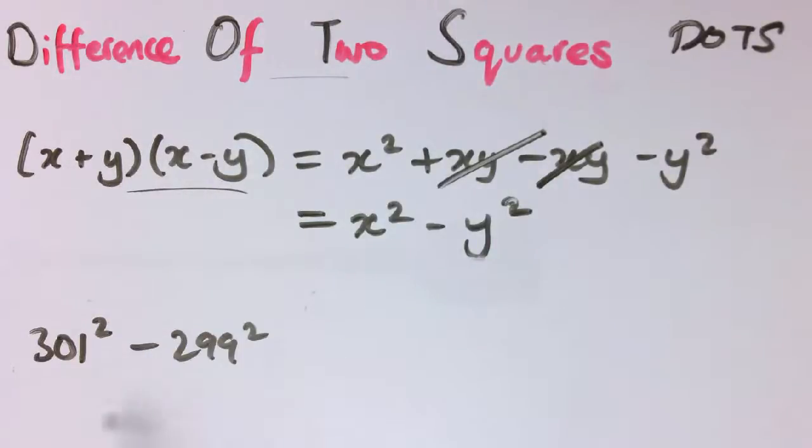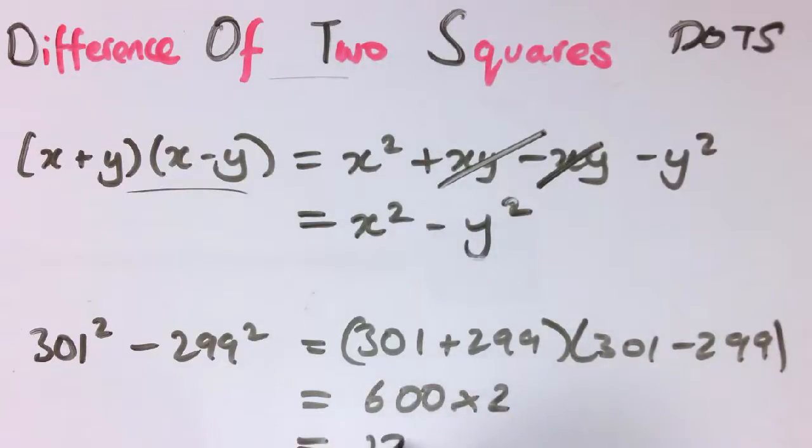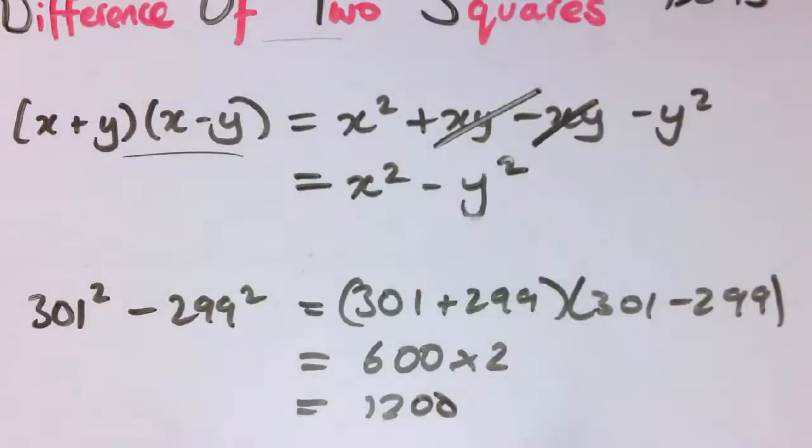That sort of thing is perhaps more useful for larger numbers. So if x is 301 and y is 299, we get 301 plus 299 times 301 minus 299. So that's 600 times 2, which is 1,200. So occasionally, we can use it to do some calculations more quickly.